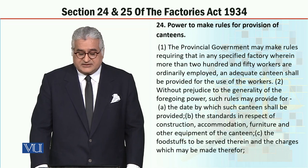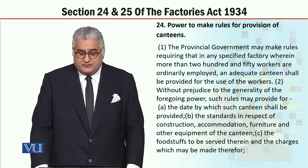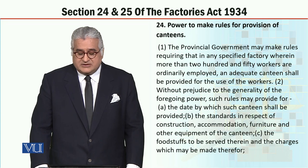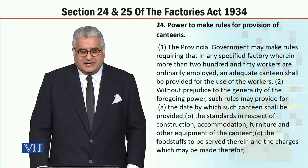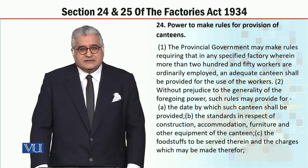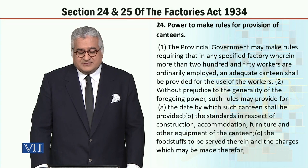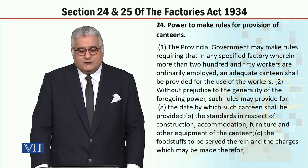Section 24, subsection 2: Without prejudice to the generality of the foregoing power. 'Without prejudice' means that the powers of the provincial government to make rules under Section 24, subsection 1, will remain completely effective and unaffected.